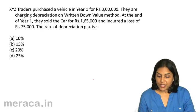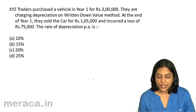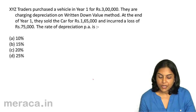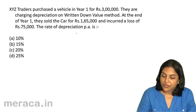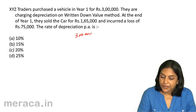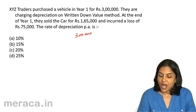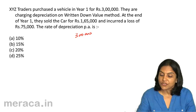The options are: A. 10%, B. 15%, C. 20%, and D. 35%. They purchased a vehicle; the cost of the vehicle was Rs. 3 lakhs. They charged depreciation under the written down value method. At the end of Year 1, the car was sold for Rs. 1,65,000 and it incurred a loss of Rs. 75,000.